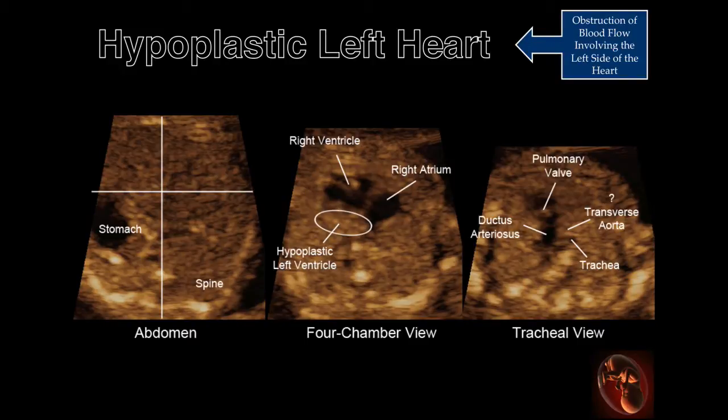The image obtained at the level of the abdomen demonstrates the stomach to be properly placed, thus identifying the left side of the fetus. The four-chamber view demonstrates the hypoplastic left ventricle and atrium with a dilated right atrium and ventricle. The tracheal view demonstrates a large ductus arteriosus with no evidence of the transverse aortic arch.